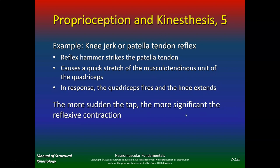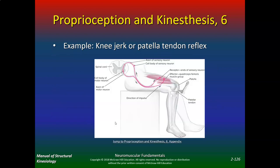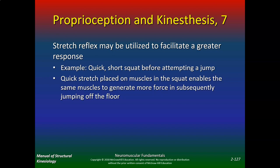The most simple example is the knee jerk or patellar tendon reflex. The reflex hammer strikes the patellar tendon, causes a quick stretch of the musculotendinous unit of the quads, and the quads fire so the knee extends. The more sudden the tap, the more significant the reflexive contraction. Some people think they have no reflexes because they're anticipating the tap — everybody has reflexes, but your brain can overpower the reflex when you concentrate on it.